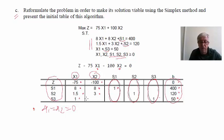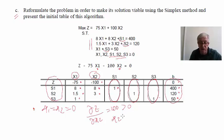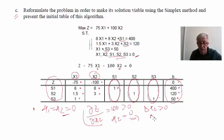This form also tells us whether the solution is optimal. For example, ∂Z/∂x2 = 100, which is greater than 0, but we are currently holding x2 = 0. If we allow Δx2 > 0, Z will increase — meaning this is not the optimal solution.